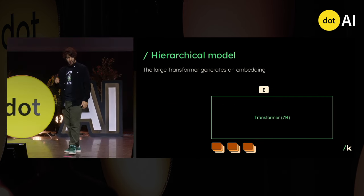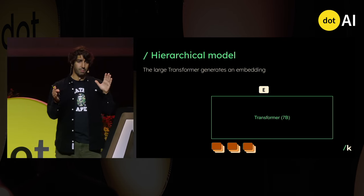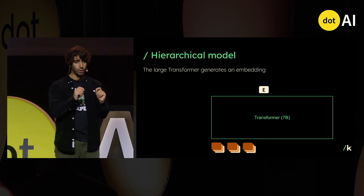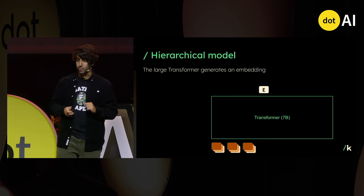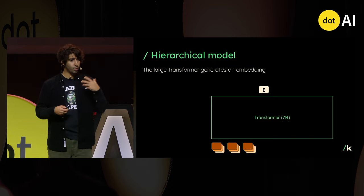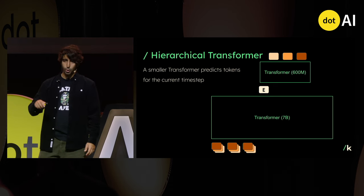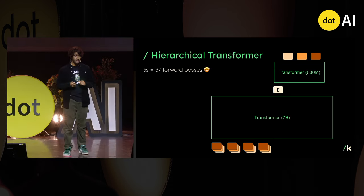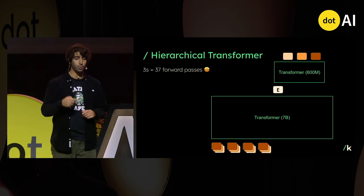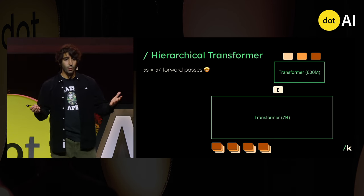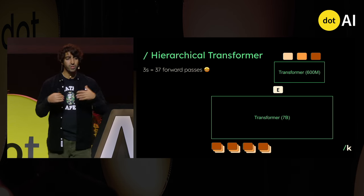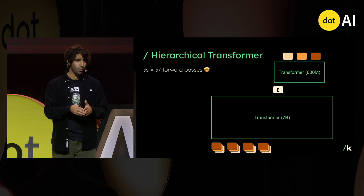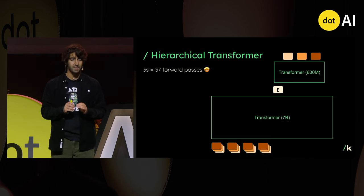What we propose instead is a hierarchical model. You take all the detail levels for a time step and, instead of flattening them, you sum them as input. On the input side, we are now back from 300 tokens for three seconds to just 37. The output of the main model is a continuous embedding, which goes into a much smaller transformer — in our case, 600 million parameters — that predicts all the detail levels for the current time step. We inject them to the next time step and repeat. This brings us down to 37 forward passes through the network. And since LLMs actually use sub-word tokens, not full words, the ratio between audio and text is even better than it sounds.